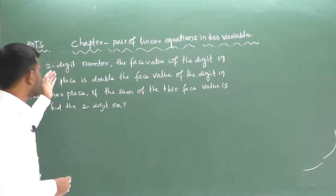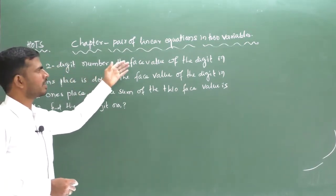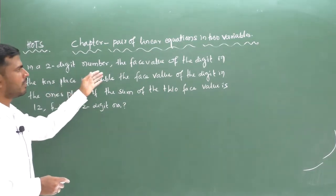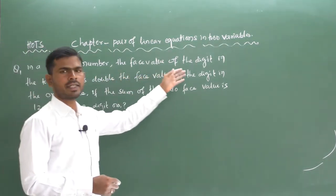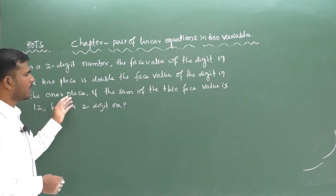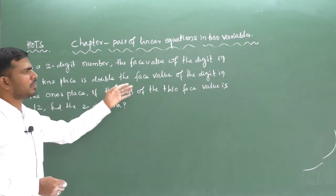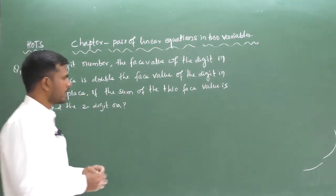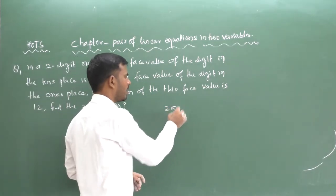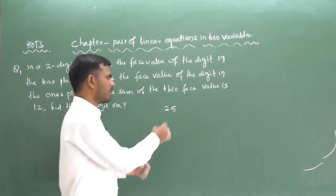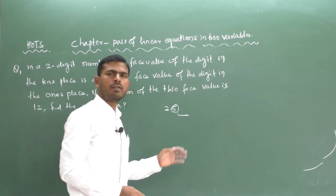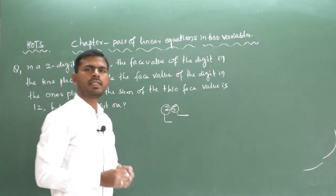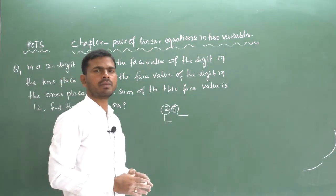In a two-digit number, the face value of the digit in the tens place is double the face value of the digit in the ones place. The sum of the two face values is 12 — find the two-digit number. For example, 25 is a two-digit number: 5 is the face value of the units place and 2 is the face value of the tens place.